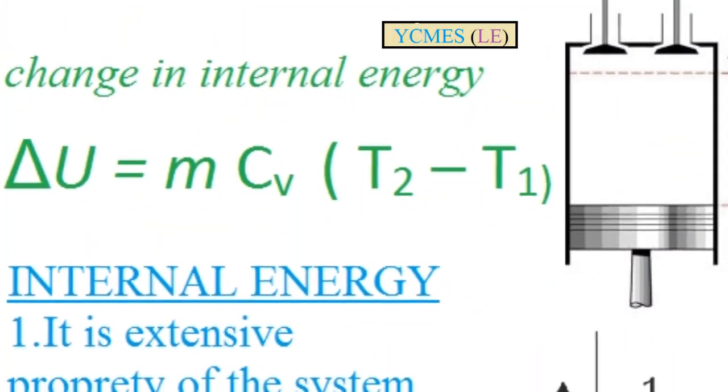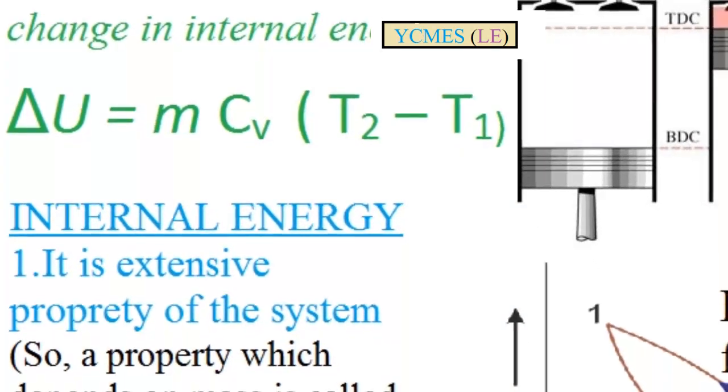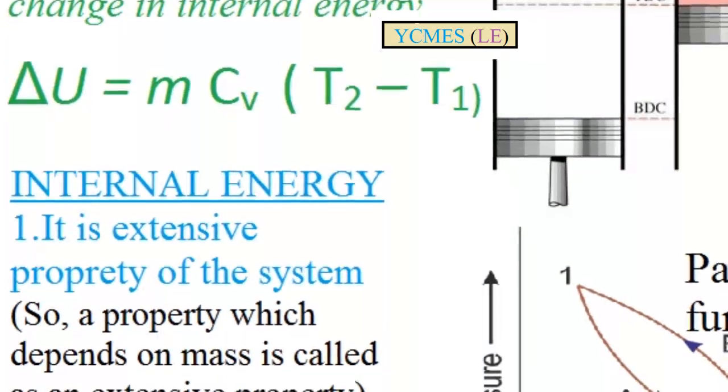How do we calculate internal energy? It's the mass of your system times the specific heat at constant volume times the temperature difference.